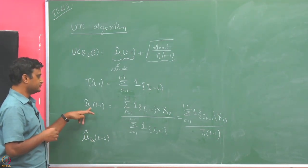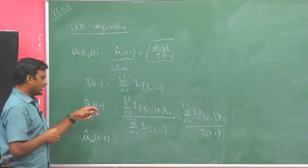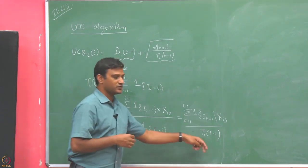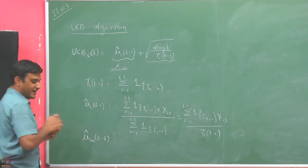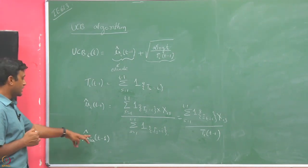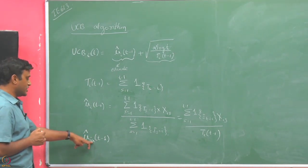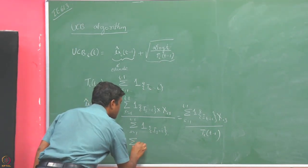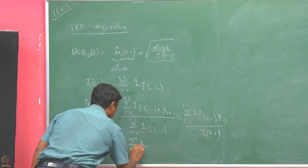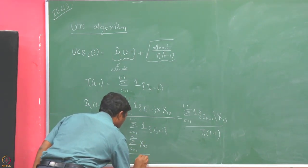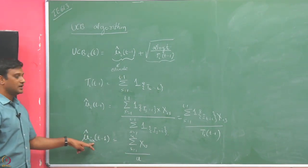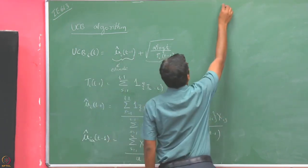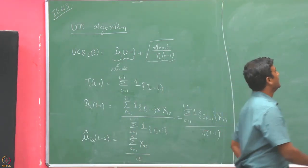When we use the notation with u fixed, that means we have exactly u samples till round t-1 and use them to compute the estimate. When we wrote the other notation, we used whatever number of samples were actually observed till t-1, i.e., t_i(t-1). If we fix that number to u, we use the fixed-u notation, and in that case the estimate simplifies straightforwardly.